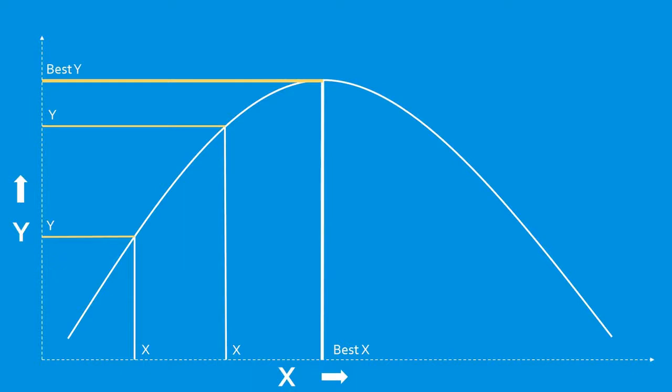You may have also solved this type of problem in calculus class by taking the derivative of the parabola and setting it equal to zero.